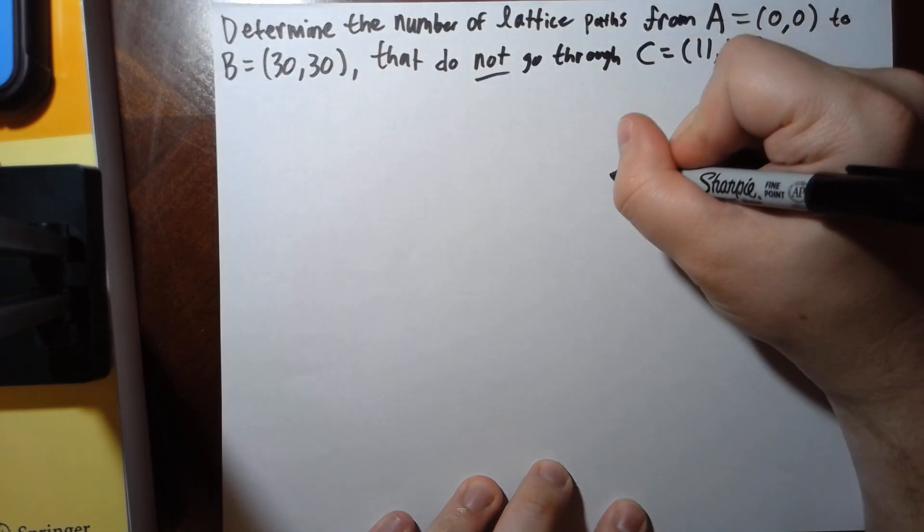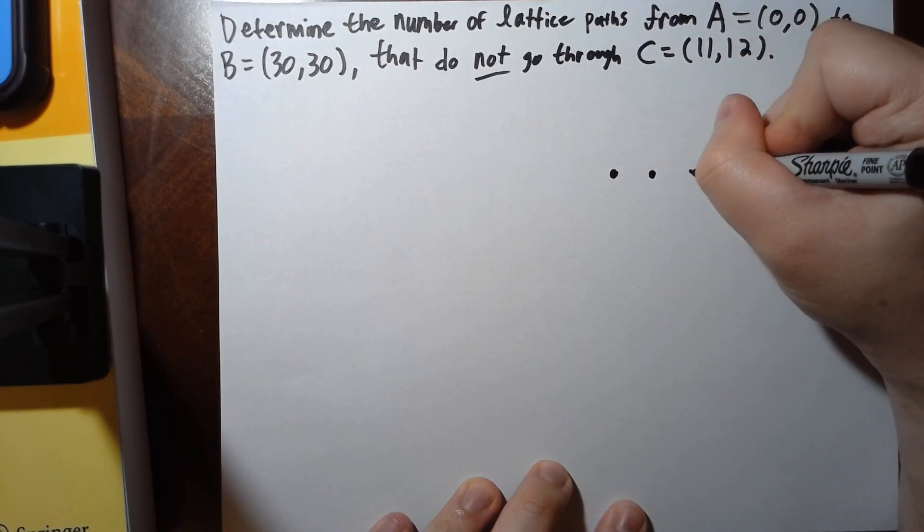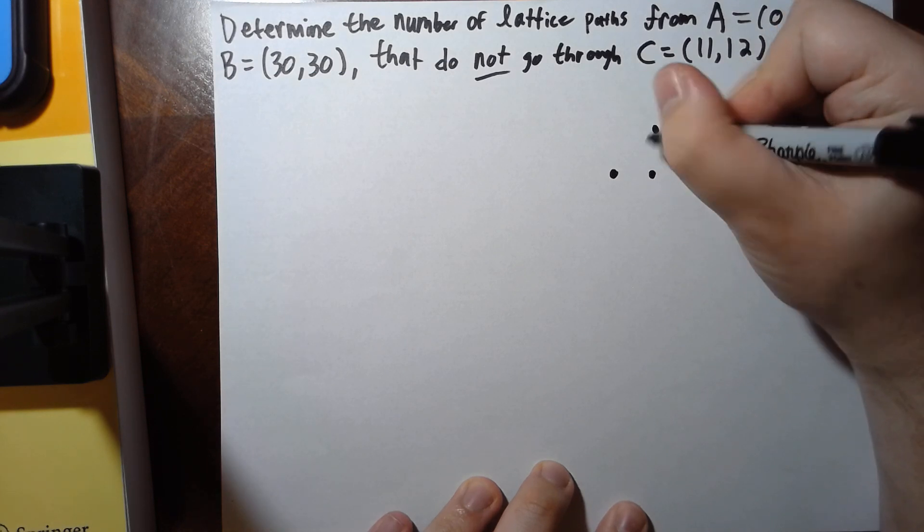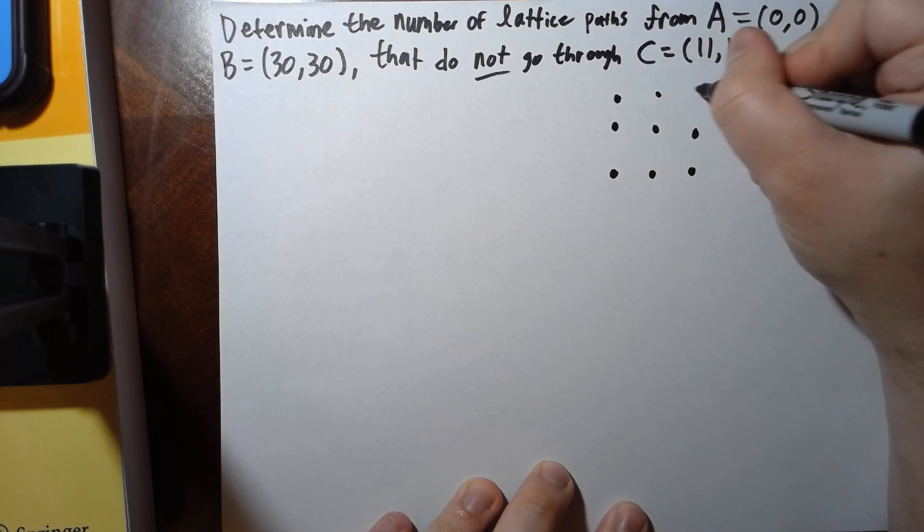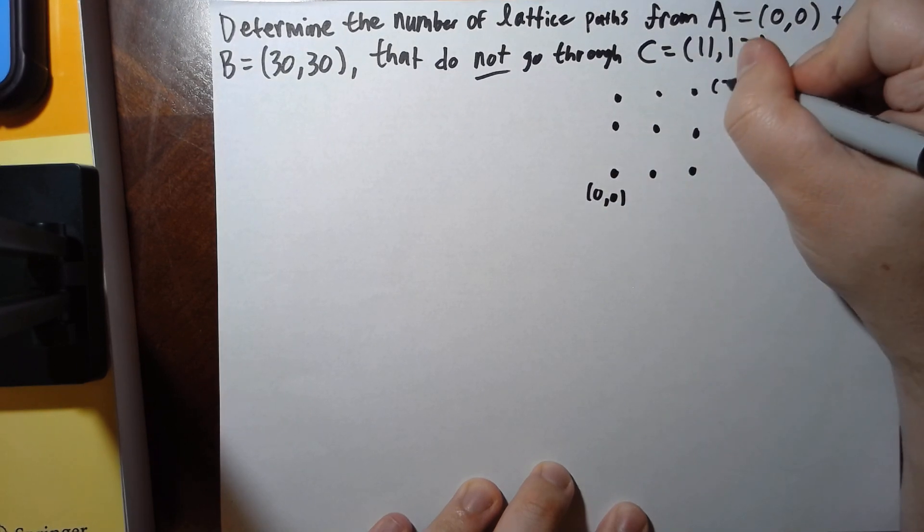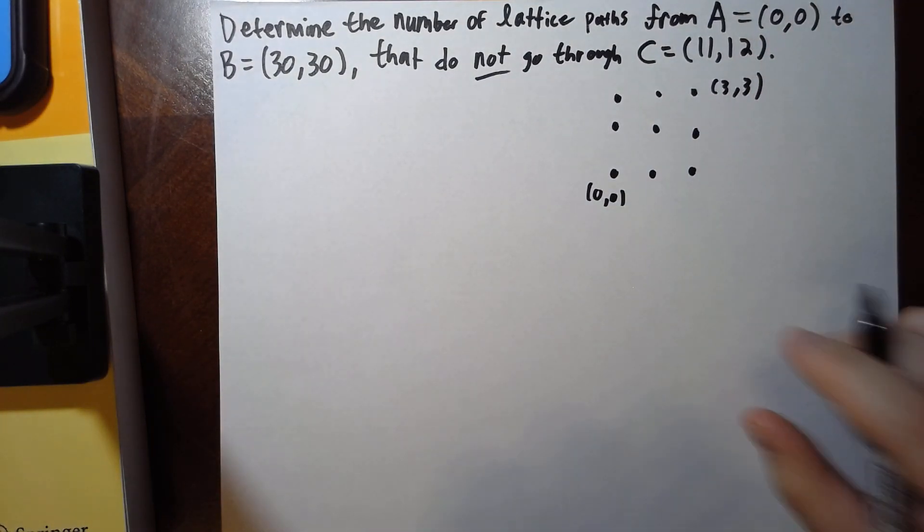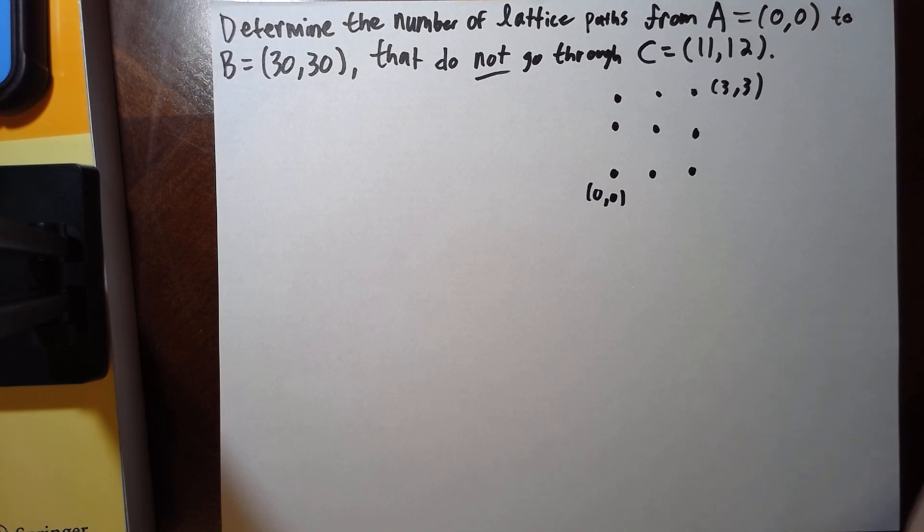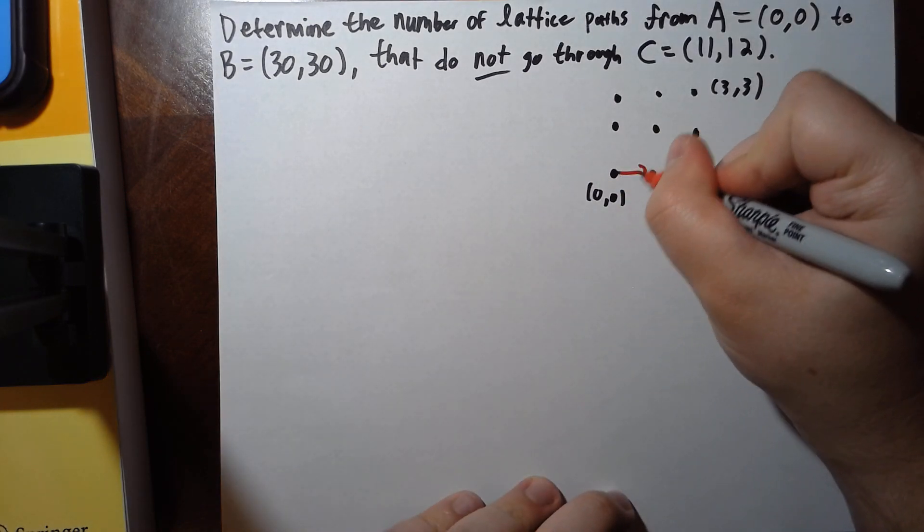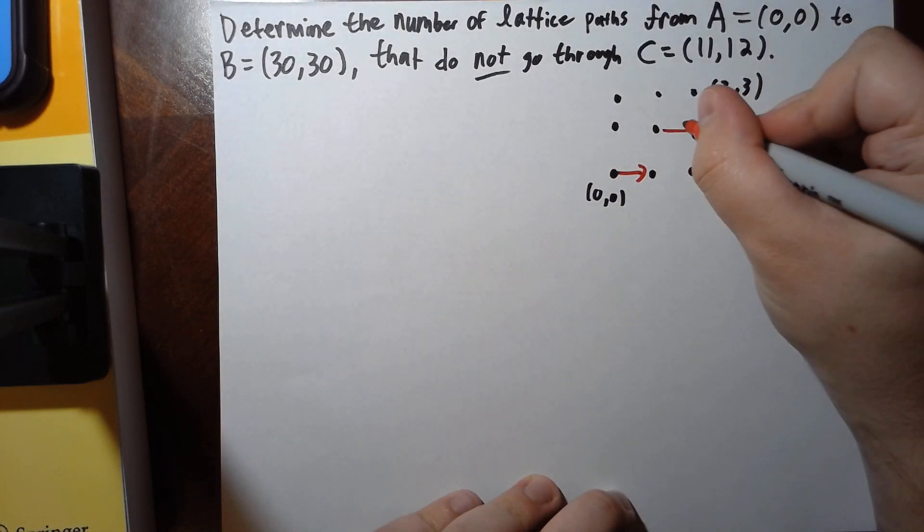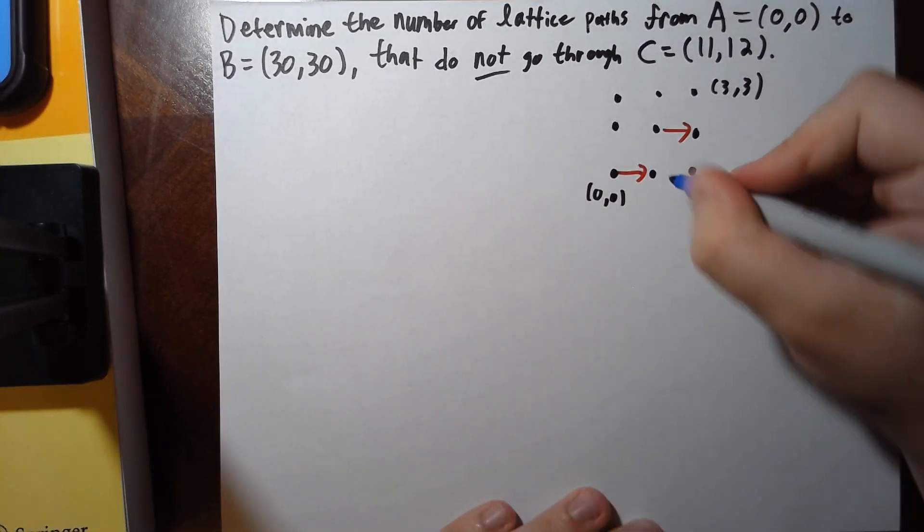First, the way you can think of lattice paths is if I want to get from here—if this is (0,0) and this is (3,3)—well, how can you get there? Well, you could go right, so you could do this: you can go right up right up.